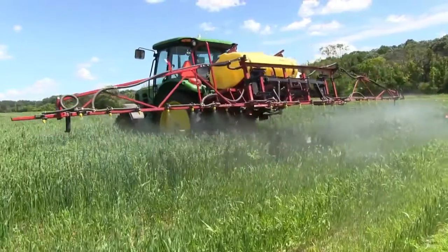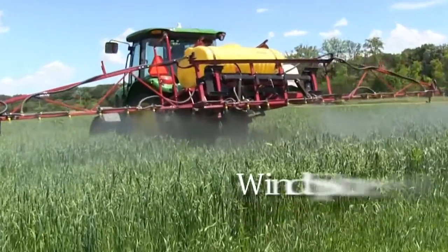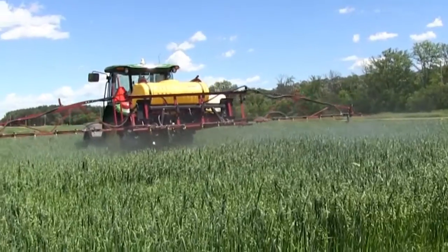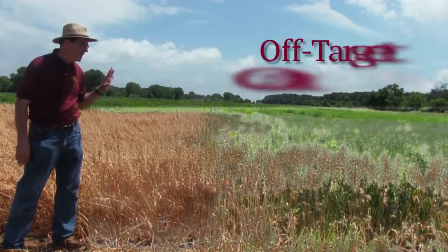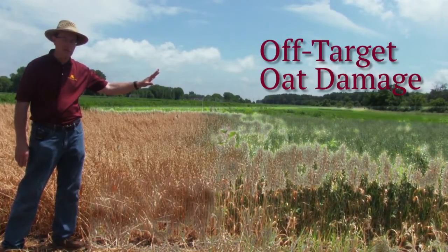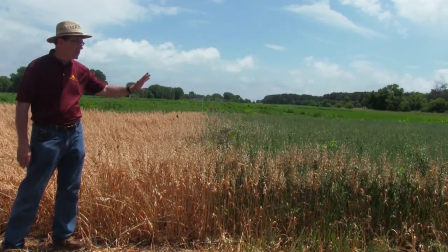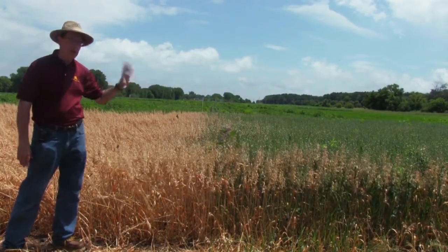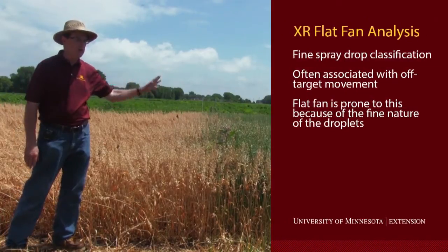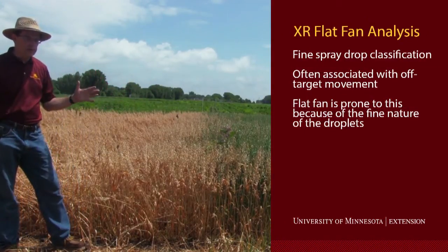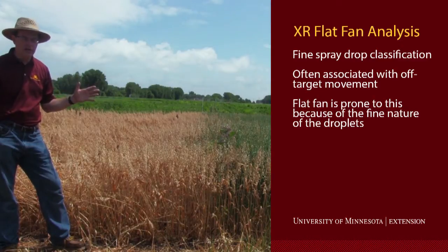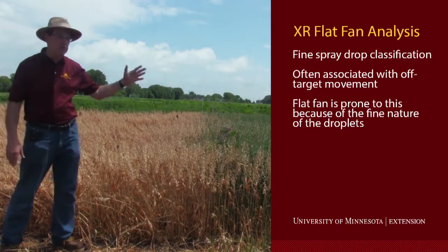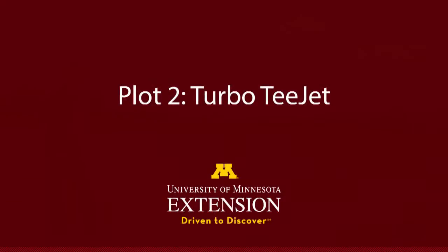Because of the wind speed that occurred at the time of application, which varied anywhere between 5 to 17 miles per hour, we did have off-target movement into the untreated area. You can see the result in terms of damage to the oats when the fine droplets moved off-target. This is something we normally see with a fine droplet type of nozzle on a flat fan — there's always a percentage that is fine and has the ability to move off-target.